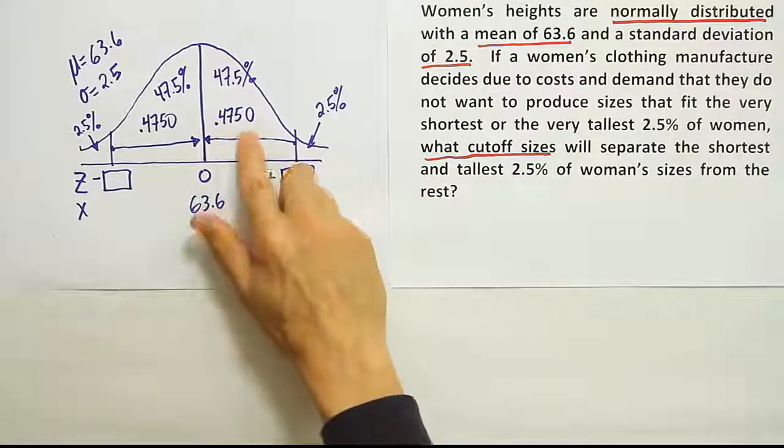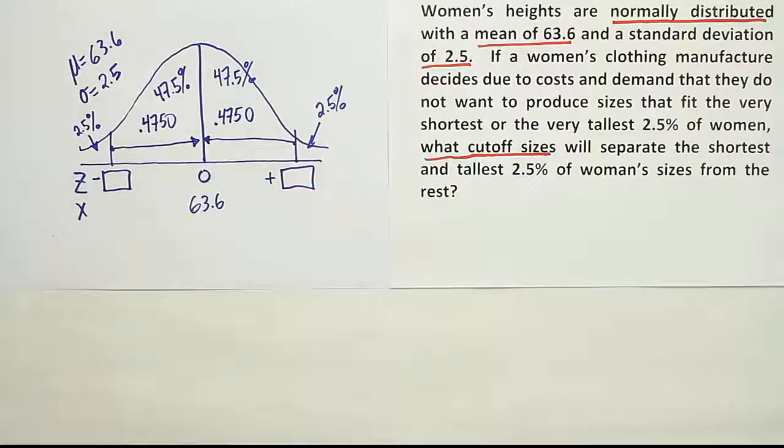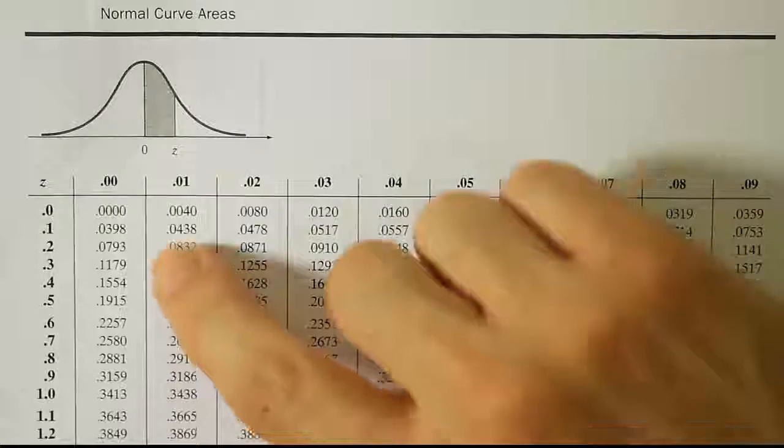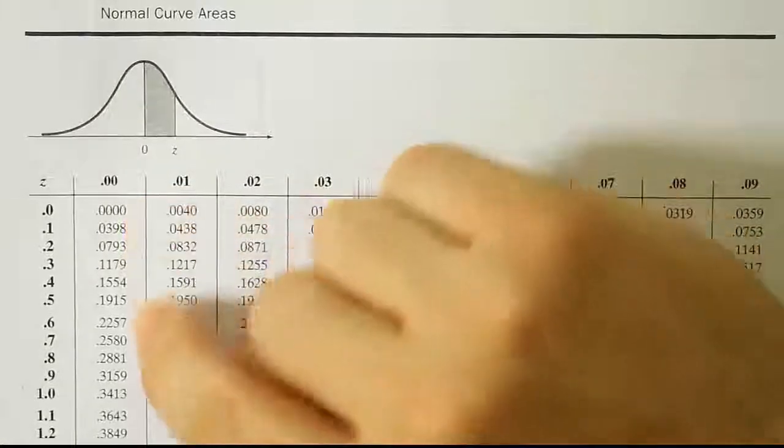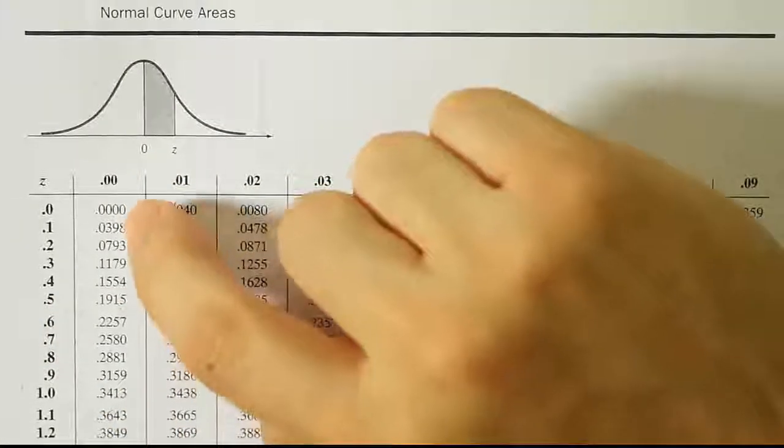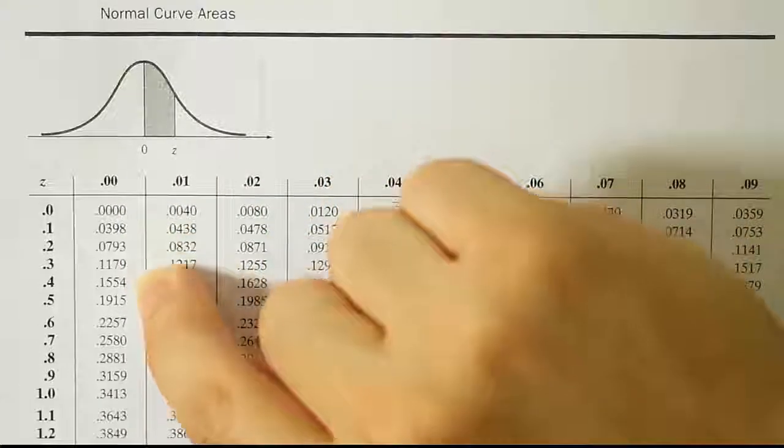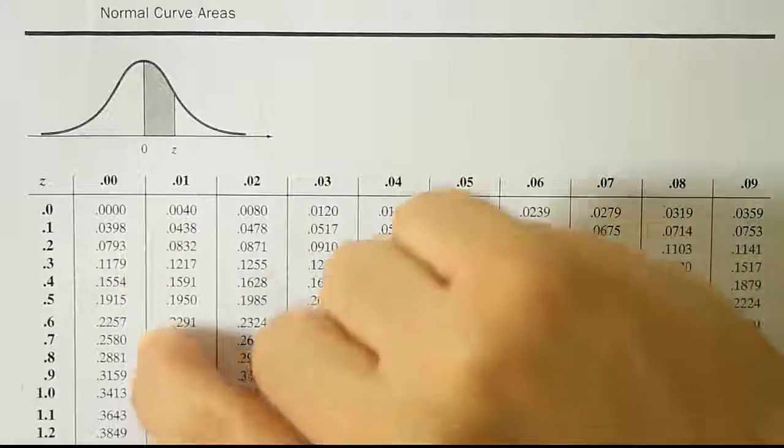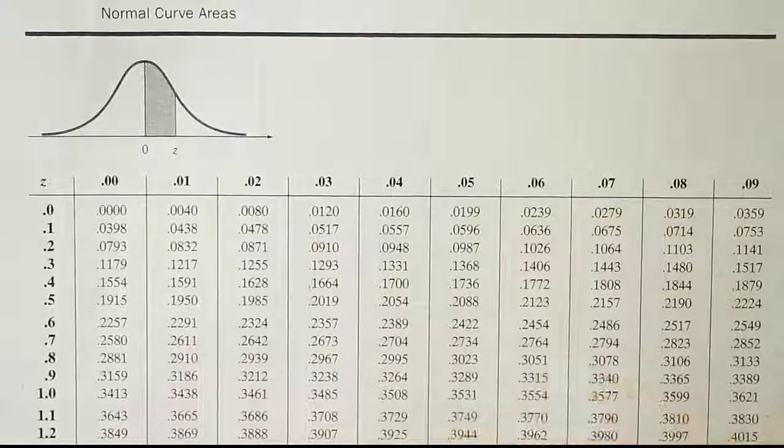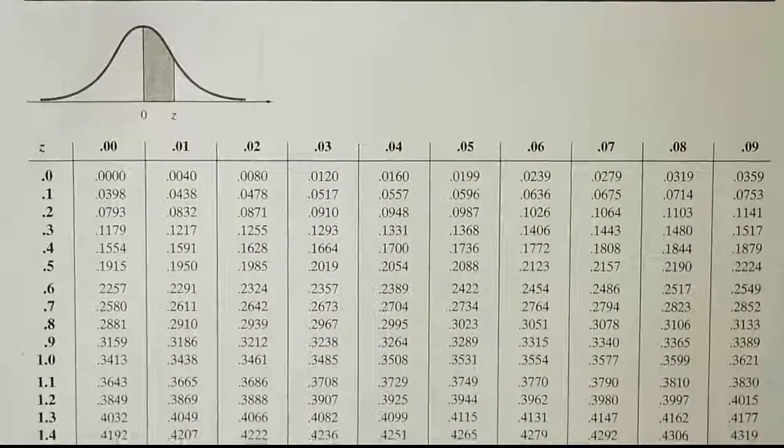So now it's time to go to the table, look up 0.4750, get that cutoff z-score. We're looking for the area 0.4750 in the body of the table so we can find the corresponding z-score. So zero percent, four percent, eight percent. We've got to go much further down in this first column to see something near 0.4750. Let's scroll the table up so we can get to something near that value.